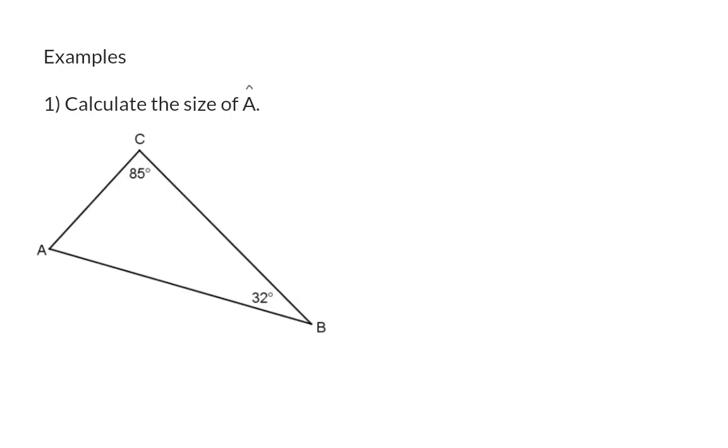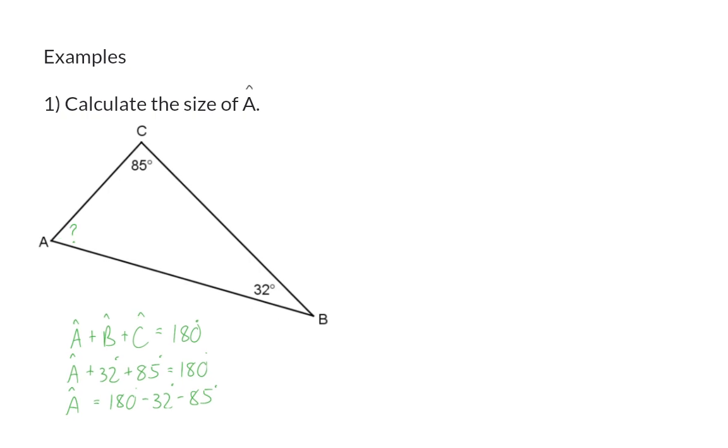Let's go and have a look at some examples. Number one, calculate the size of angle A. Here we have a triangle where two of the angles are given. We know that in a triangle, angle A plus angle B plus angle C should add up to 180 degrees. We were given that angle B is 32 degrees and angle C 85 degrees. And this means that angle A can be determined by taking the 180 and subtracting 32 as well as 85. So angle A in the end is 63 degrees.